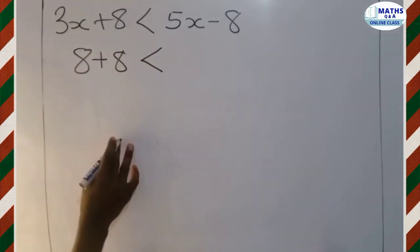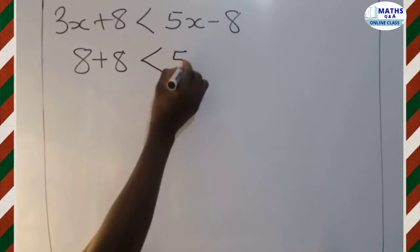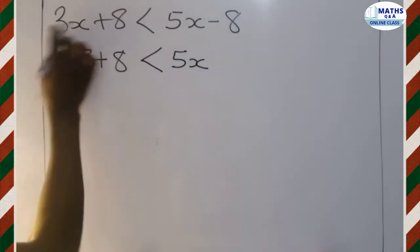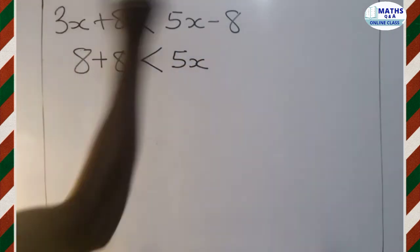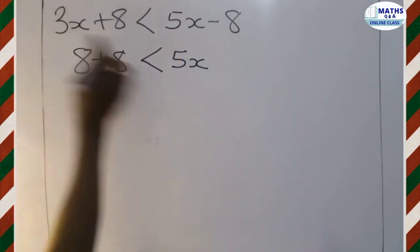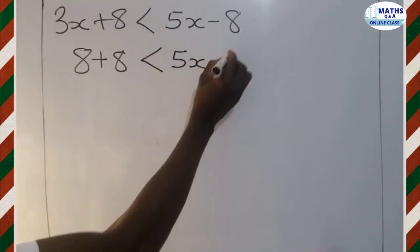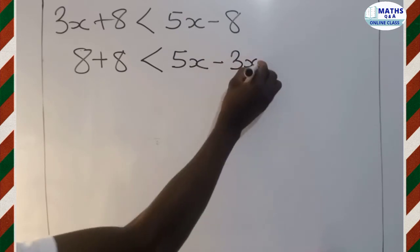Now, my less than sign. I have 5x here already. And I'm sending this 3x from the left to the right of the inequality sign. It's positive. So when it comes here, you have to go out negative. So I have negative 3x.